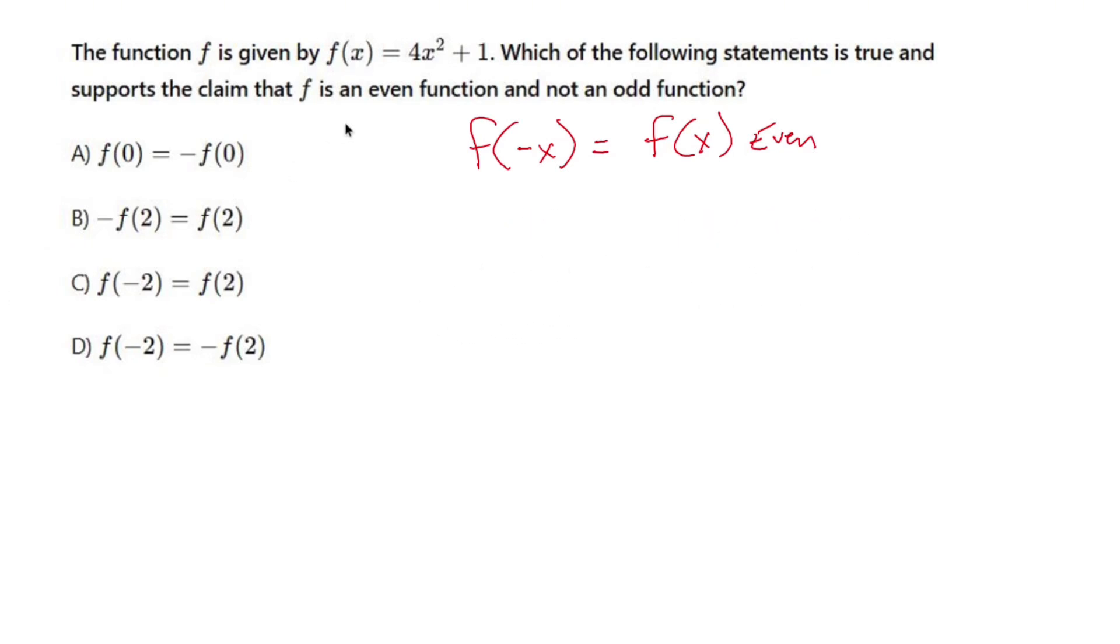We have to take every x value in f(x), plug in negative x, and see if we get the original function. That's going to be 4(-x)² + 1, which equals 4x² + 1.